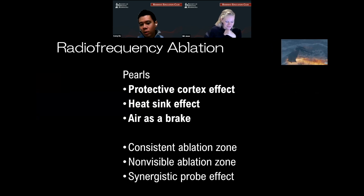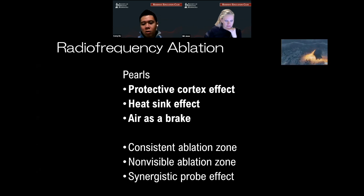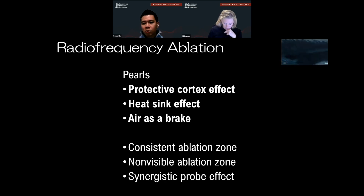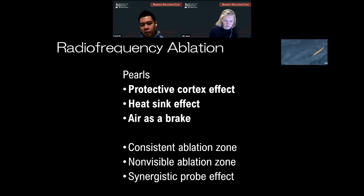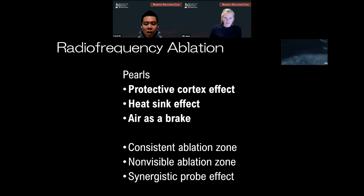These are the pearls for when we use radiofrequency ablation. There's theoretically a protective cortex effect — in an animal model it showed up to 30% reduction in power when you ablate and hit a solid cortex. There's also a heat sink effect: imagine placing that probe inside a highly vascular lesion with constant blood pumping and pulling away all the heat you've created — that decreases your ablation effect. The notion of using air as a break is important: the probe sitting in air where molecules are far apart reduces the ionic agitation. Radiofrequency ablation has a consistent ablation zone, though it is a non-visible ablation zone. There's also a synergistic probe effect that fortuitously forms in a vertebral body shape when probes are placed together.